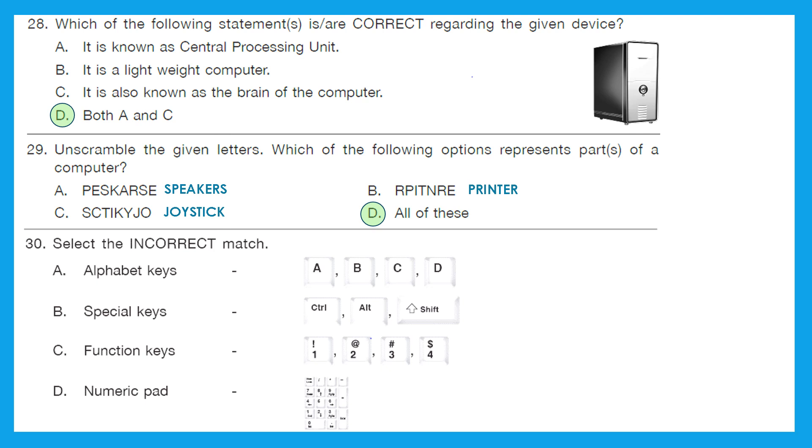Question 30: Select the incorrect match. A. Alphabet keys. Are these A, B, C, D? That's true. This is the right one. B. Special keys. Control, Alt, Shift. That is also correct because these all are called special keys. C. Function keys. Now this is not correct because function keys start with F. Generally the F is mentioned over there. D. Numeric pad. That is also correct. So the right answer for us would be option C because it is an incorrect match.